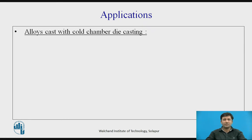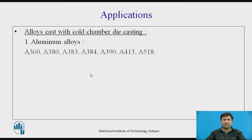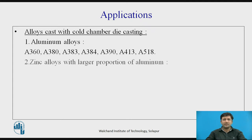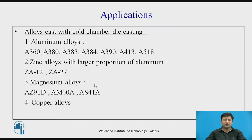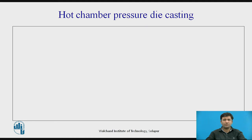Applications — alloys cast with cold chamber die casting: aluminum alloys, specifically A360, 380, 383, 384, 390, 413, and 518. Zinc alloys with larger proportions of aluminum are also cast, specifically ZA12 and ZA27. Magnesium alloys AZ91D, AM960A, and ES41A. Copper alloys are also cast using cold chamber die casting.